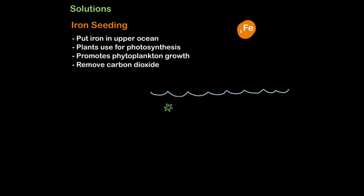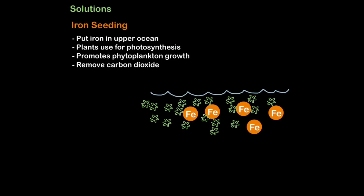There are some pretty clever solutions to this carbon dioxide problem. The first one is called iron seeding. This is when we put iron in the upper ocean, like so. And then microscopic plants called phytoplankton use it for photosynthesis and as a result grow in number. Now, just like any plant, they remove carbon dioxide through the process of photosynthesis. So carbon dioxide will be absorbed by this phytoplankton.